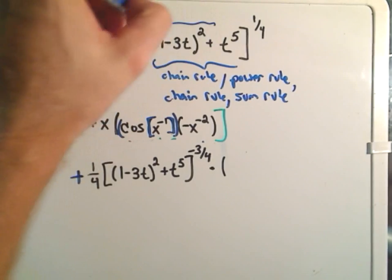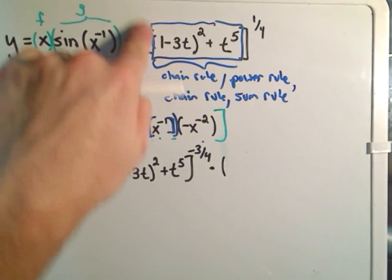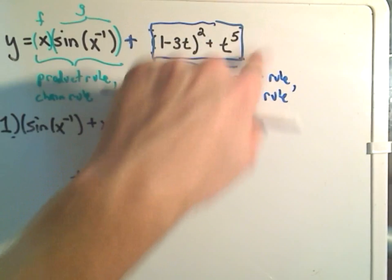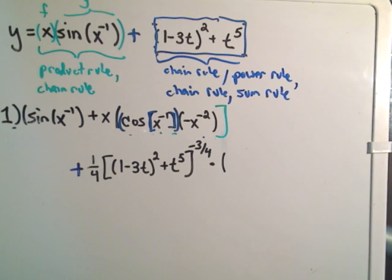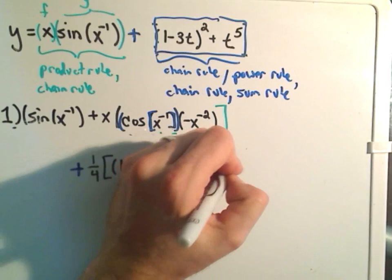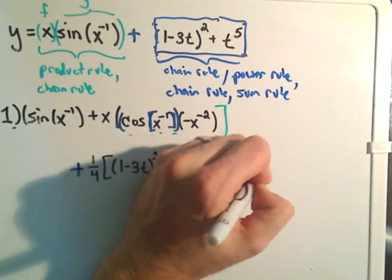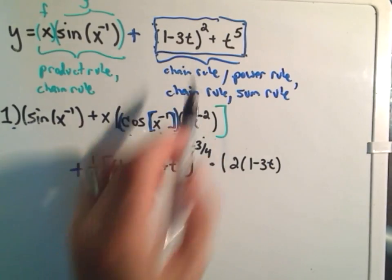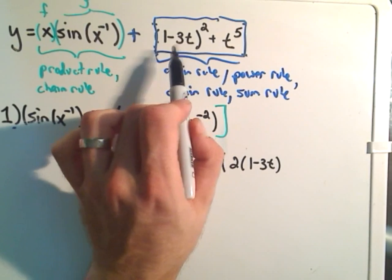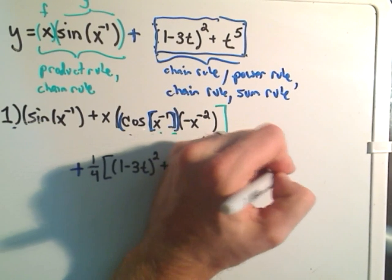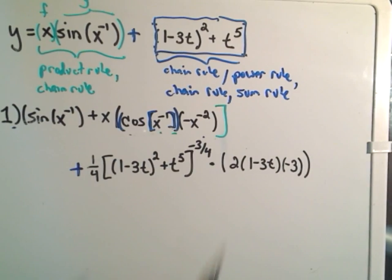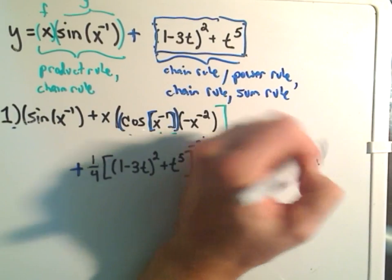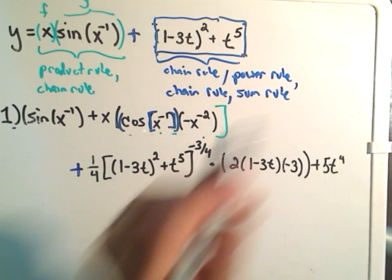Then, we have to multiply by the derivative of the inside stuff. So, now I'm looking at this stuff. I'm pretending as though the rest of the problem was no longer even there, because I've messed with that part. And I think, how would I take the derivative of this stuff? Well, for the first guy, the 2 would come out front. I would leave the 1 minus 3t inside alone. Then, I have to multiply by the derivative of the inside, which would be just negative 3. Okay? So, that's the first part. And then, I have to add the derivative of t to the fifth, which is 5t to the fourth.